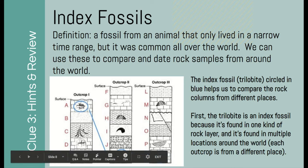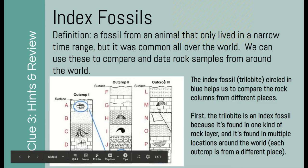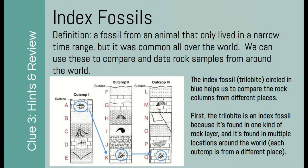For this example, this is not an index fossil because it's only found in one location and not found anywhere else in the world. The majority of these are only found in one location. This one is found in two locations, but if you look at the background, the two rock layers don't actually match up. That means this animal lived in one time period in one area, and then a different time period in another area, so we cannot use it to match up rock layers and relatively date them.